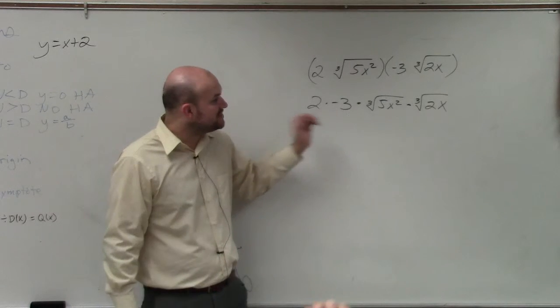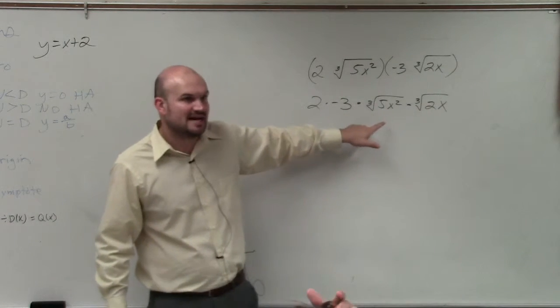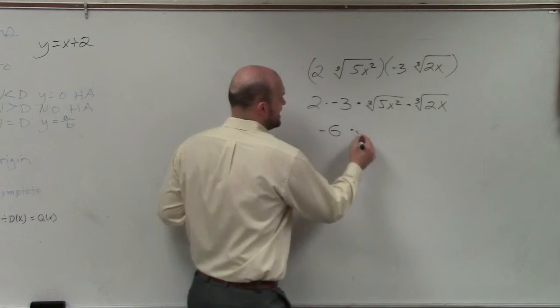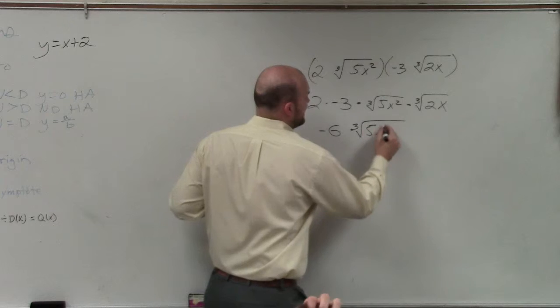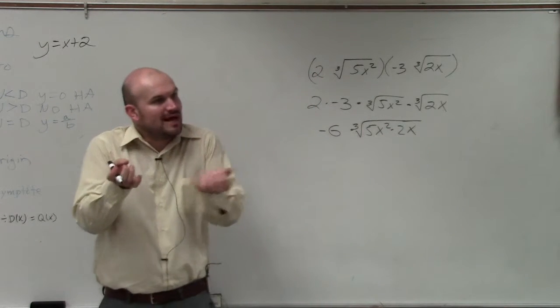For multiplication and division, you can multiply these. You multiply the radicands actually together. So in this case, we have negative 6 times the cube root of 5x squared times 2x. They actually go under the radicand together.